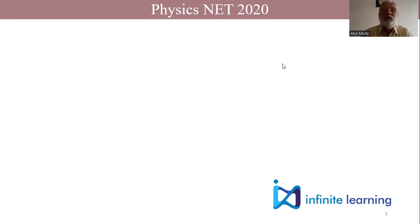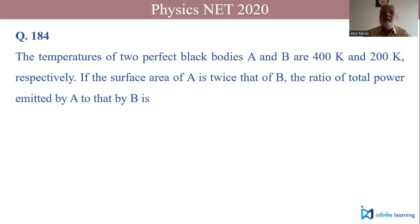Hello, in this video we will be discussing a problem from Physics NET exam of 2020. The problem is on black body radiation. The code number for the problem is 184.